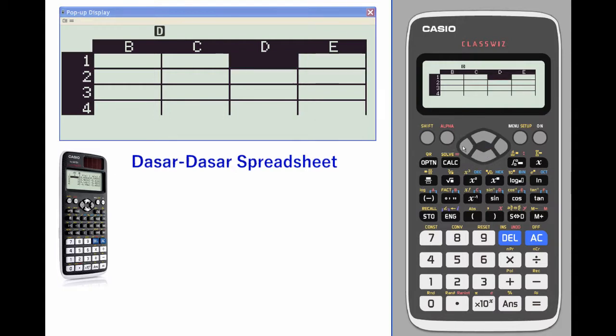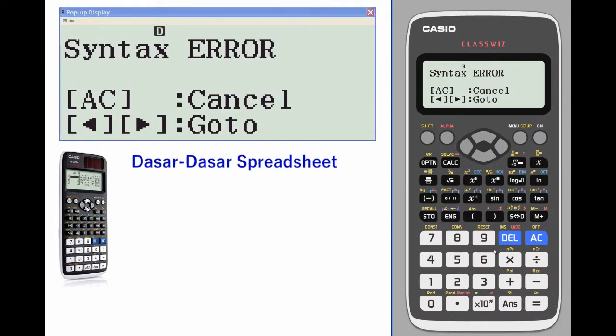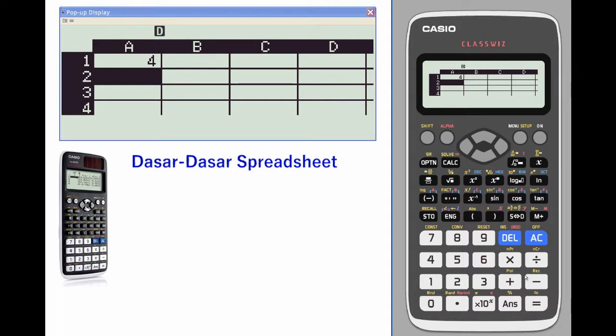To enter data, just type in the number you want, positive or negative. I want a negative five, not a minus. You can also add formulas.